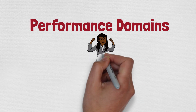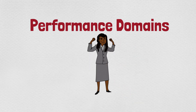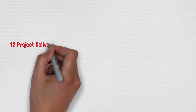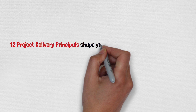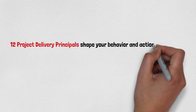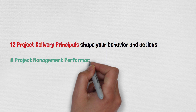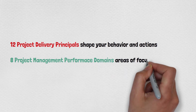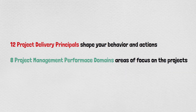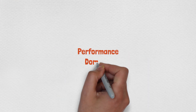PMI defines a project performance domain as a group of related activities that are critical for the effective delivery of project outcomes. These performance domains are interdependent and overlapping. In my previous video, we discussed 12 project delivery principles which shape your behavior and actions towards a project. In this video, the 8 project management performance domains are areas of focus on the project.